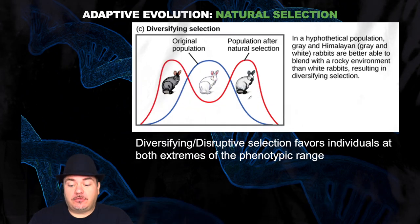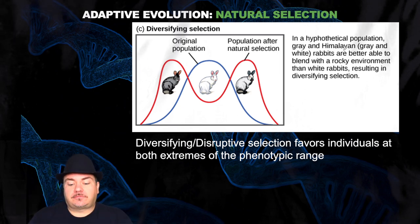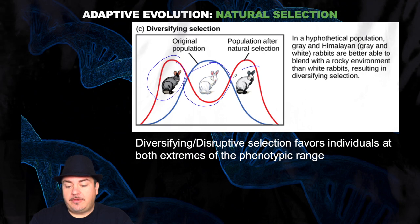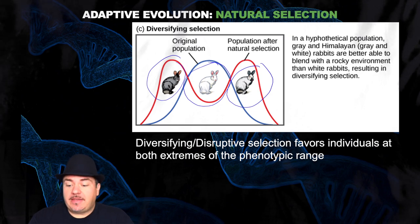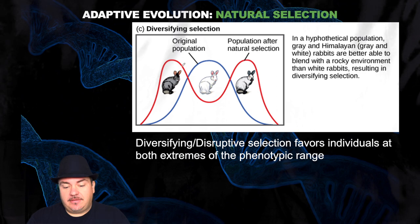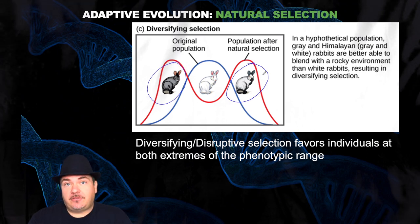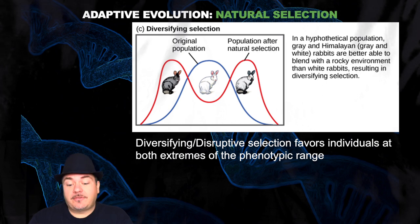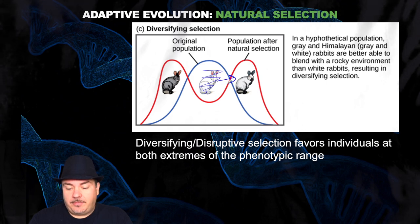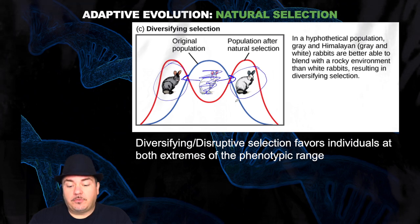The next example is diversifying, also called disruptive selection, and it favors individuals at the two extremes of the phenotypic range. In this example, these rabbits can be a gray color, a white color, or a Himalayan color, which is gray and white in patterns. Let's say these rabbits happen to be living in a rocky environment. In that case, it's easier for the gray ones and the Himalayan ones to hide because they match nicely with that rocky background, whereas the white ones stick out. Due to natural selection, because those rabbits have predators, the predators more easily see the white ones over time. These start to die out, and over time the population shifts to the two extreme phenotypes — the darker gray and the Himalayan — and you get rid of this middle range phenotype.